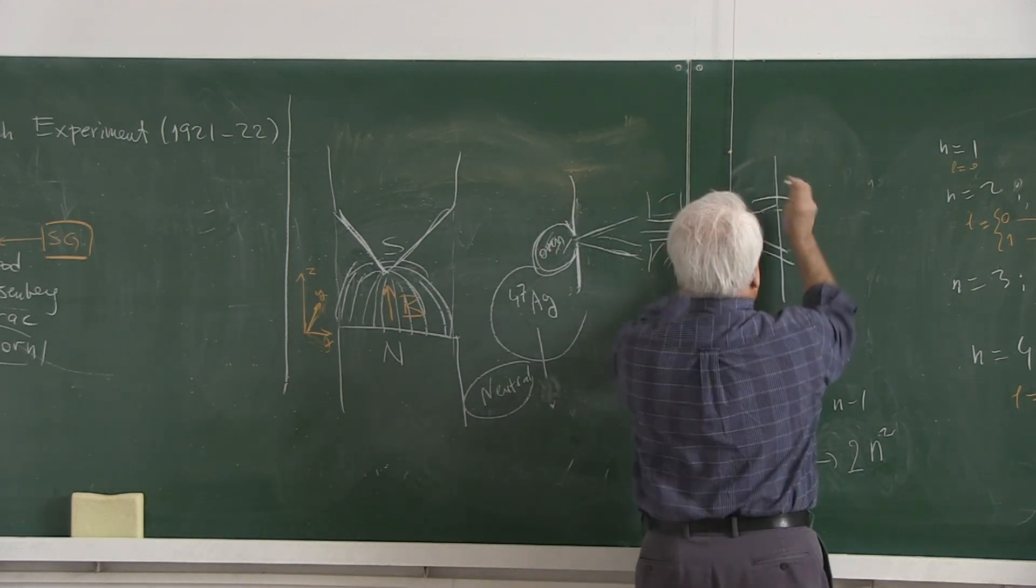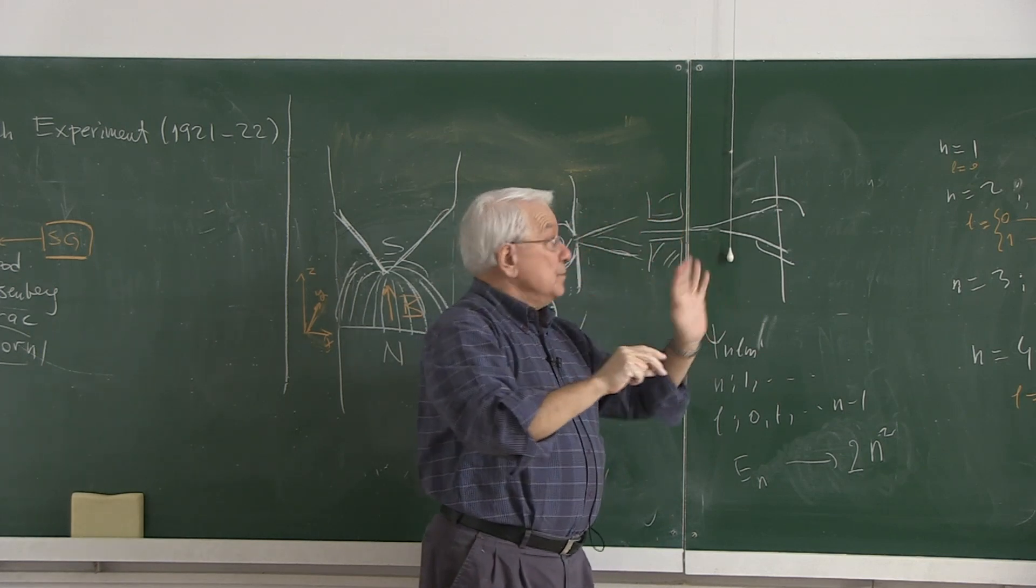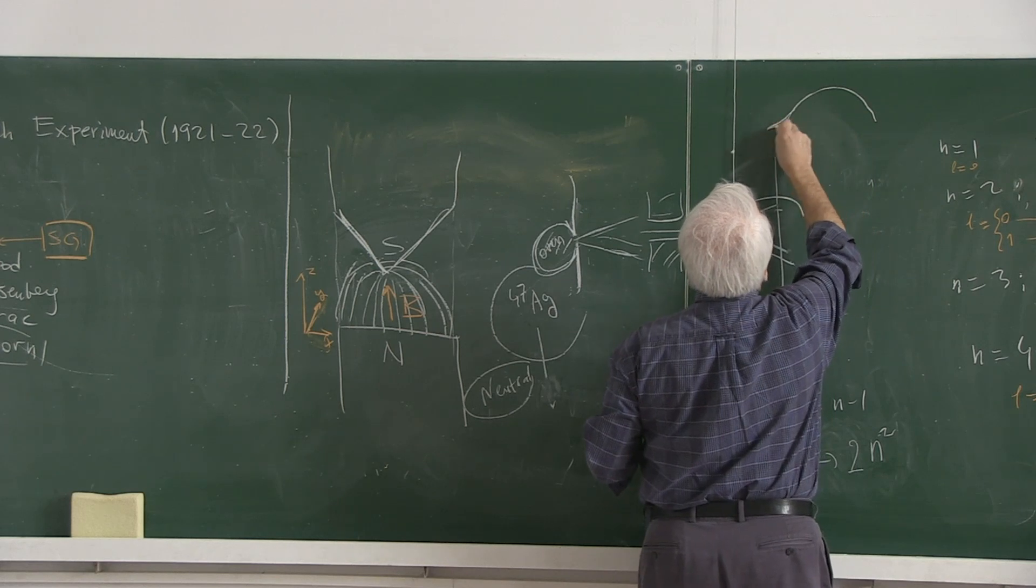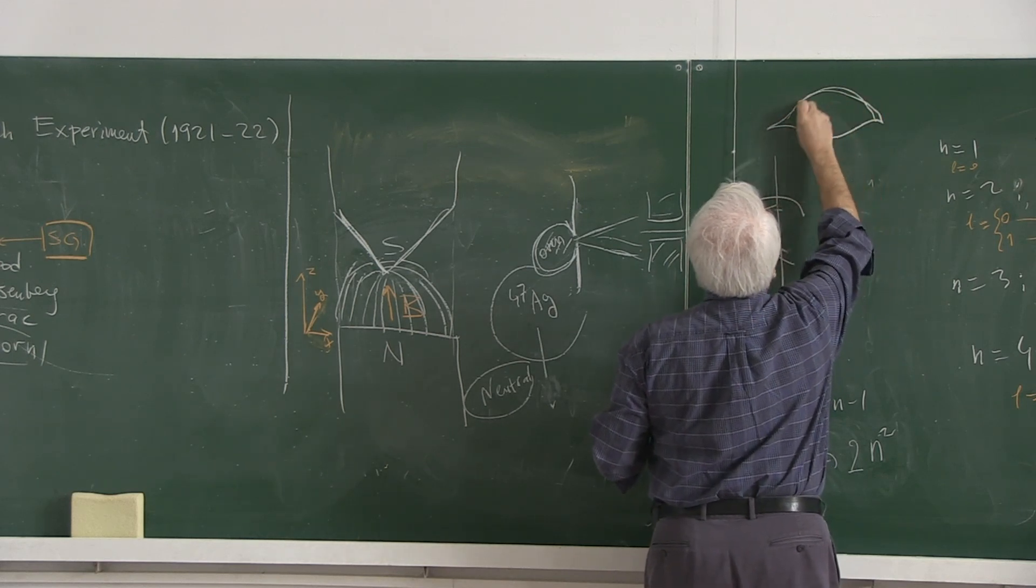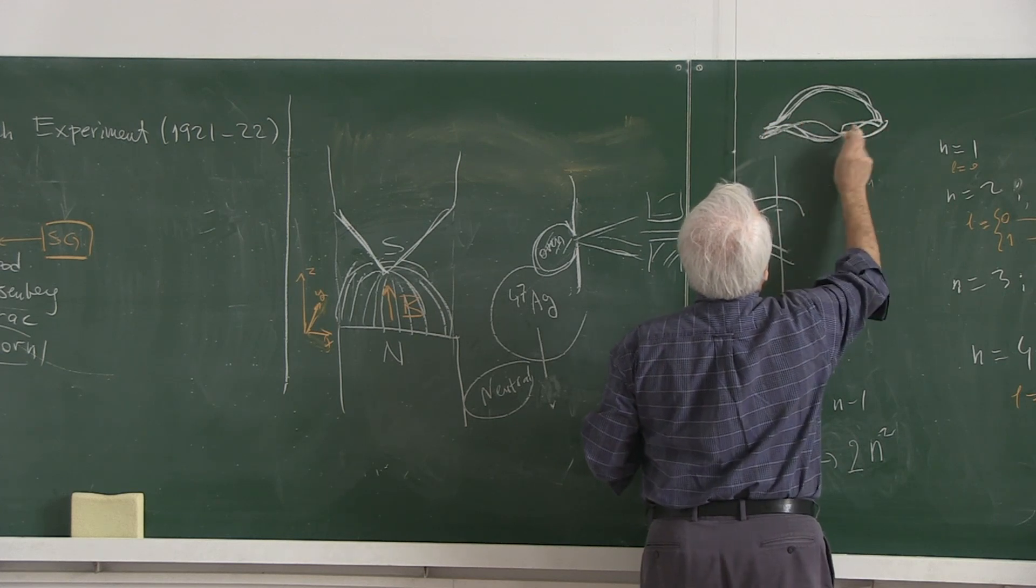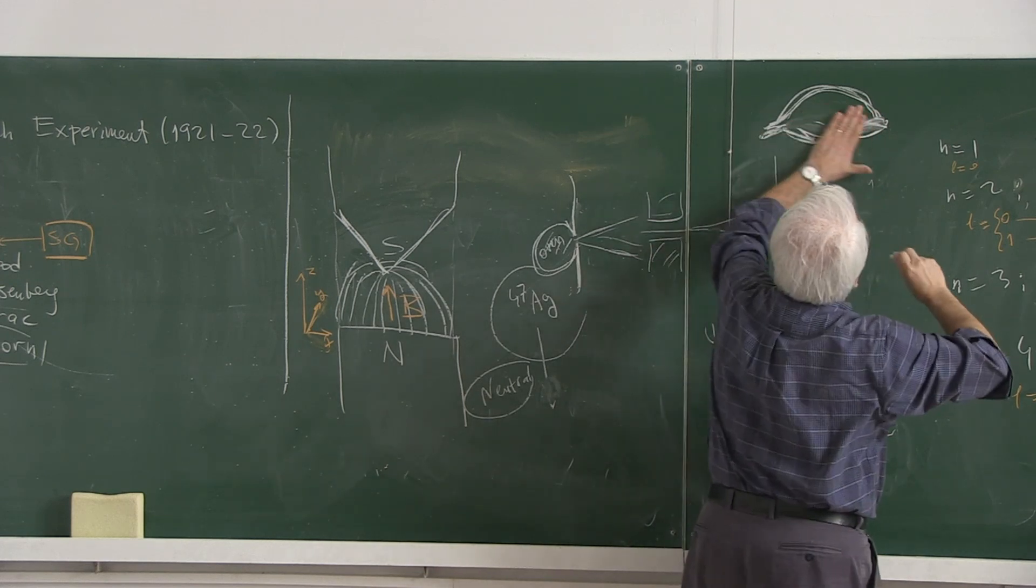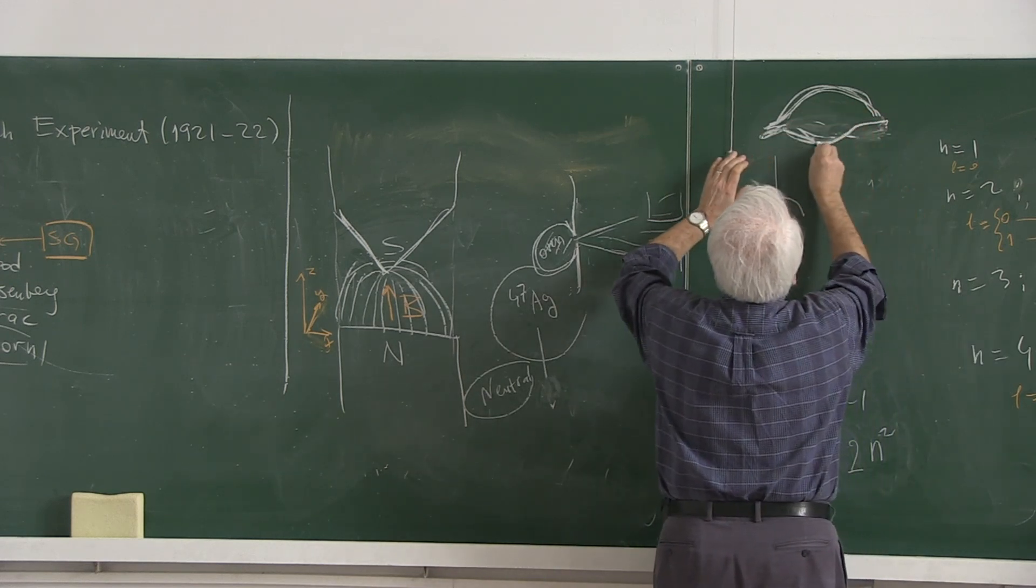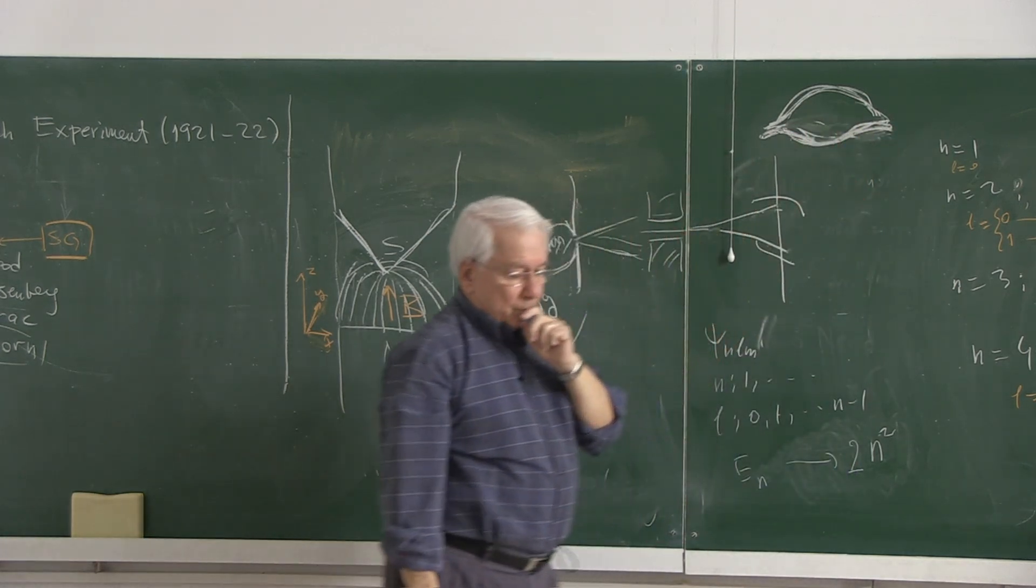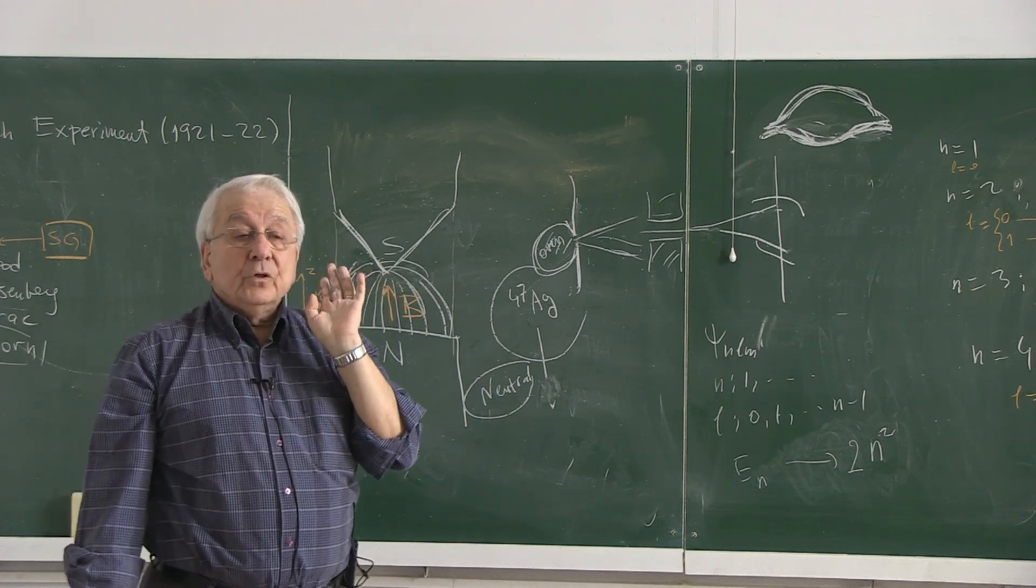If you look at the traces from this side, you look at it and you see something like this. Instead of the full trace in the photographic plate. So that's Stern-Gerlach.